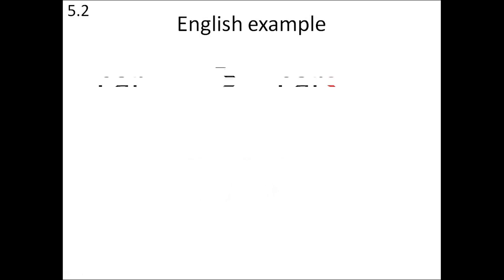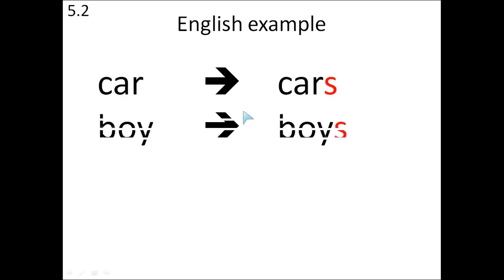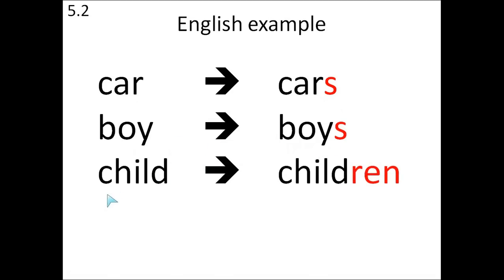I'd just like to start off with an example in English. If we have the word 'car', it becomes the word 'cars' — all we did was add an S. If we had the word 'boy', we just add an S to make 'boys'. These are regular plurals. But if we have the word 'child', we can't just add the letter S to make the plural. We actually have to add a whole new suffix, R-E-N: 'children'. So sometimes we have plurals that follow simple rules, and sometimes we have plurals that follow complex rules.